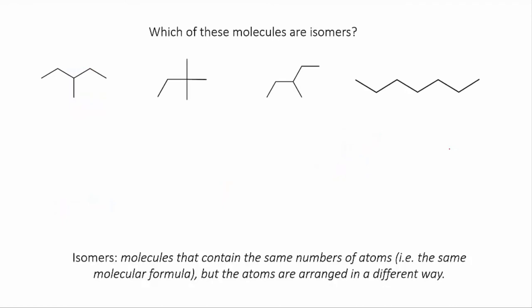Let's now look at this collection of molecules and work out if any of them are isomers. So let's number them first. We'll call this one number one, two, three, four.